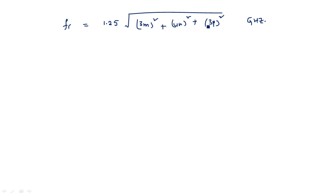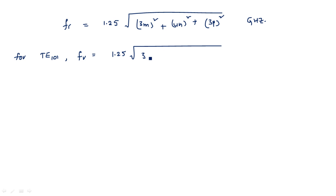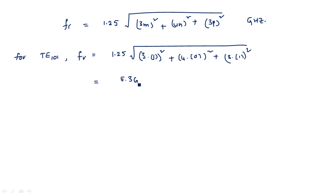The lowest possible mode is TE101: m=1, n=0, p=1. Substituting: fr = 1.25 × √[(3×1)² + (4×0)² + (3×1)²] = 1.25 × √[9+0+9]. After simplification, fr equals 5.3 gigahertz.